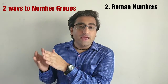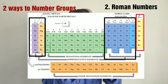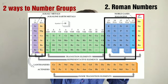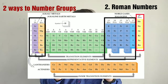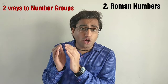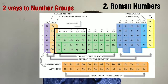Let us start numbering. Group number 1 is tall and hence it is given the number 1A. Group number 2 is also tall and hence it is given the number 2A. The next tall column is group number 13 and hence it is given the number 3A. Groups 14, 15, 16 and 17 are also tall and hence they are given the numbers 4A, 5A, 6A and 7A respectively. Group number 18 is called group 0 because it consists of the inert gases.